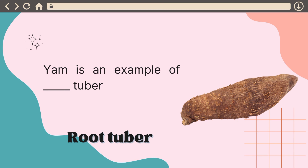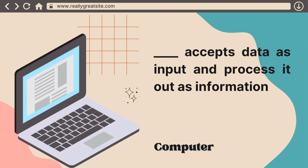The next one says: yam is an example of a root tuber. Yam is a root tuber. It is gotten from the root. You dig the ground to bring out the yam. It is not from stem, it is not from leaf, it is from roots.